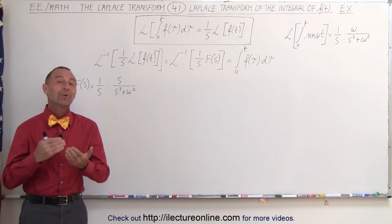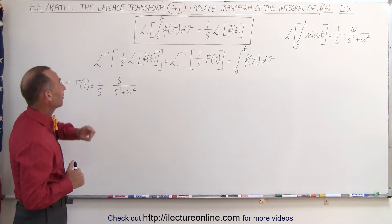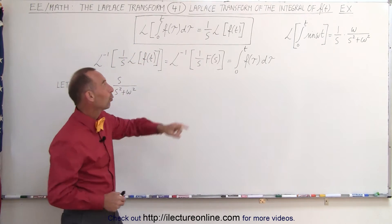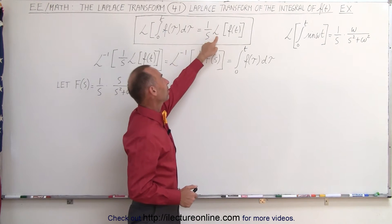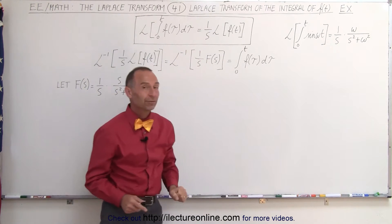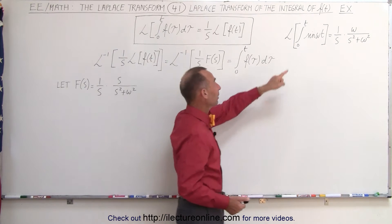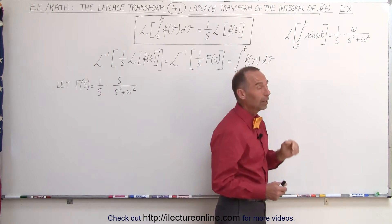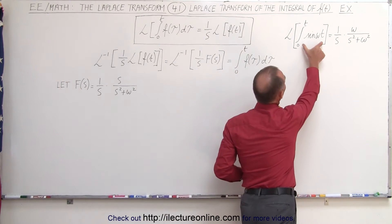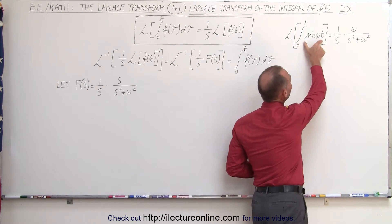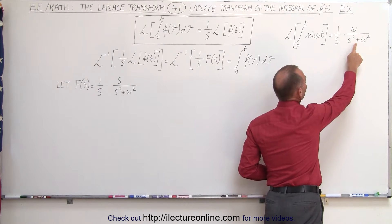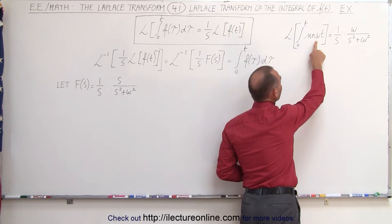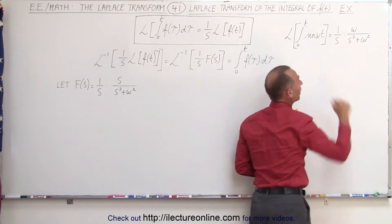Welcome to Electronline. In the previous video we saw that if you want to take the Laplace transform of the integral of a function, that is equal to 1 over s times the Laplace transform of the function itself. A really easy example of that is taking the Laplace transform of the integral of sine of omega t. We know the Laplace transform of sine of omega t alone is omega divided by s squared plus omega squared, so we simply multiply it times 1 over s.